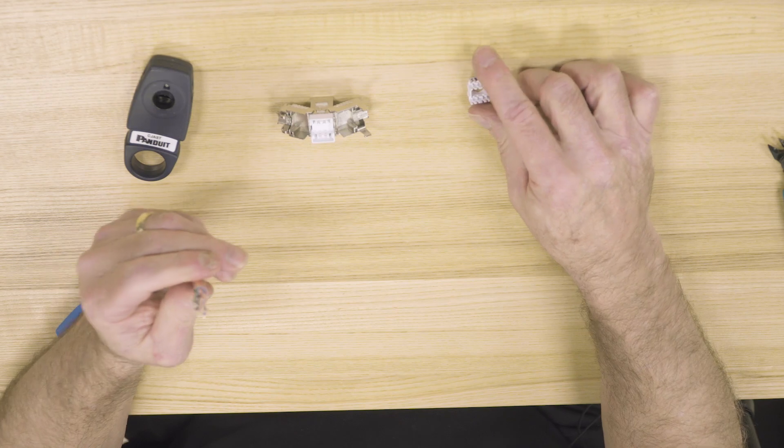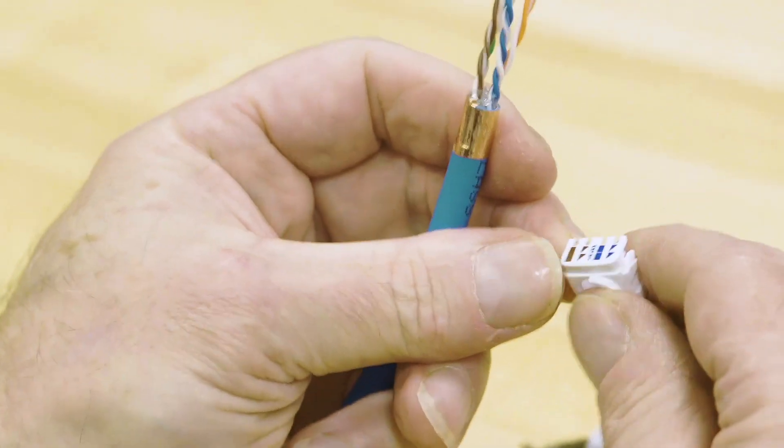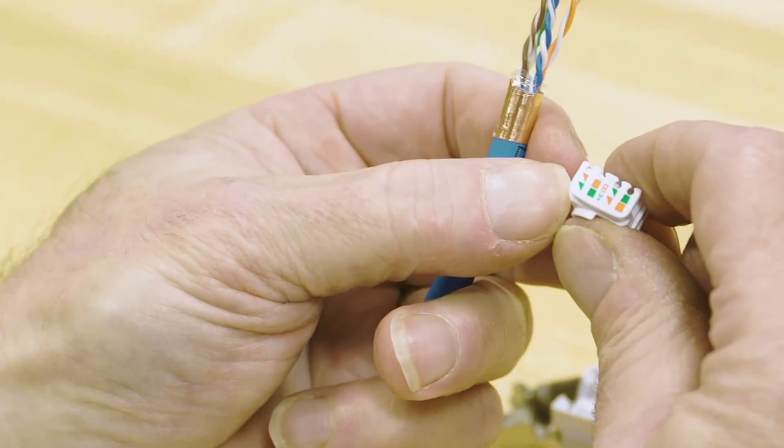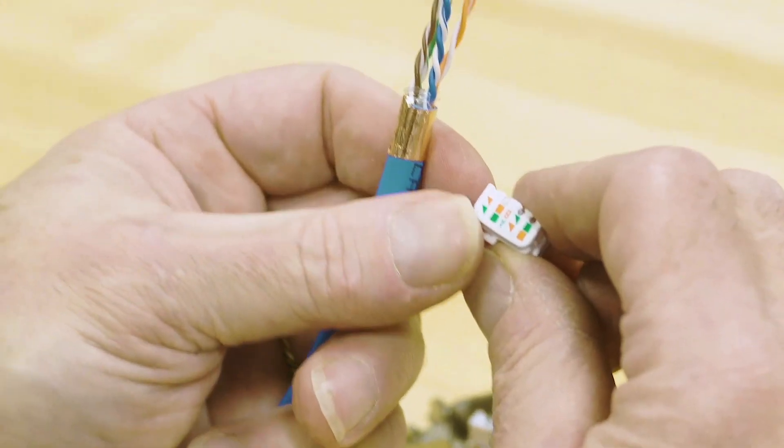Now take the wire cap. You'll see it's color-coded - brown and blue on one side, green and orange on the other. We'll be demonstrating a B wiring scheme.